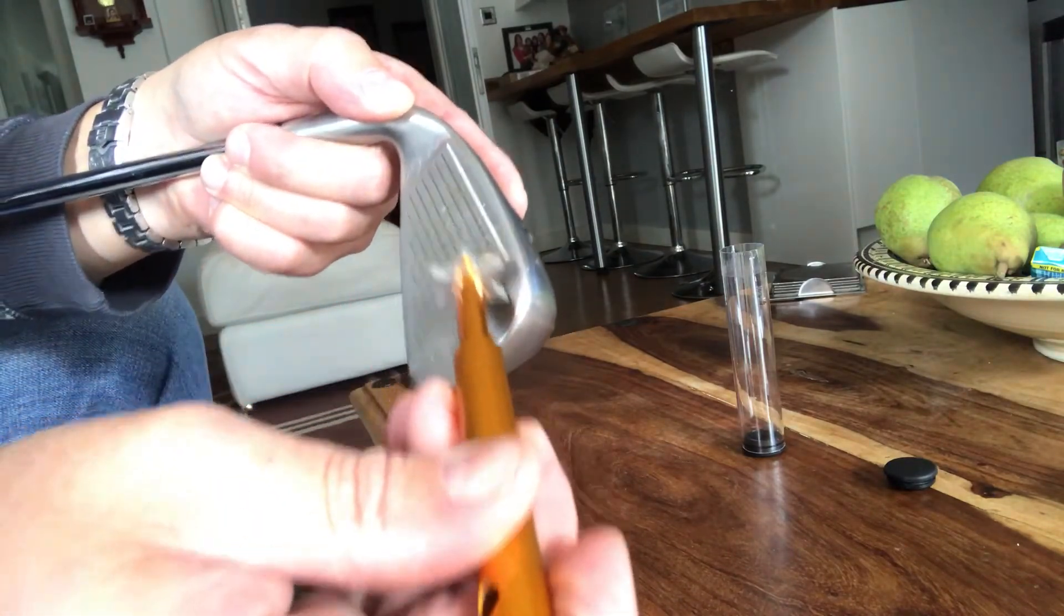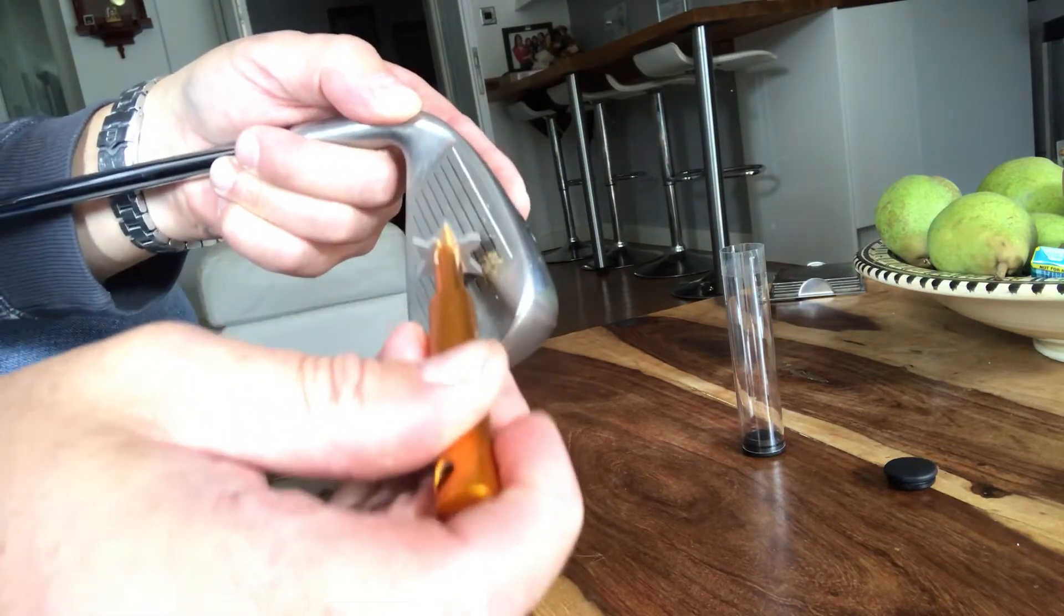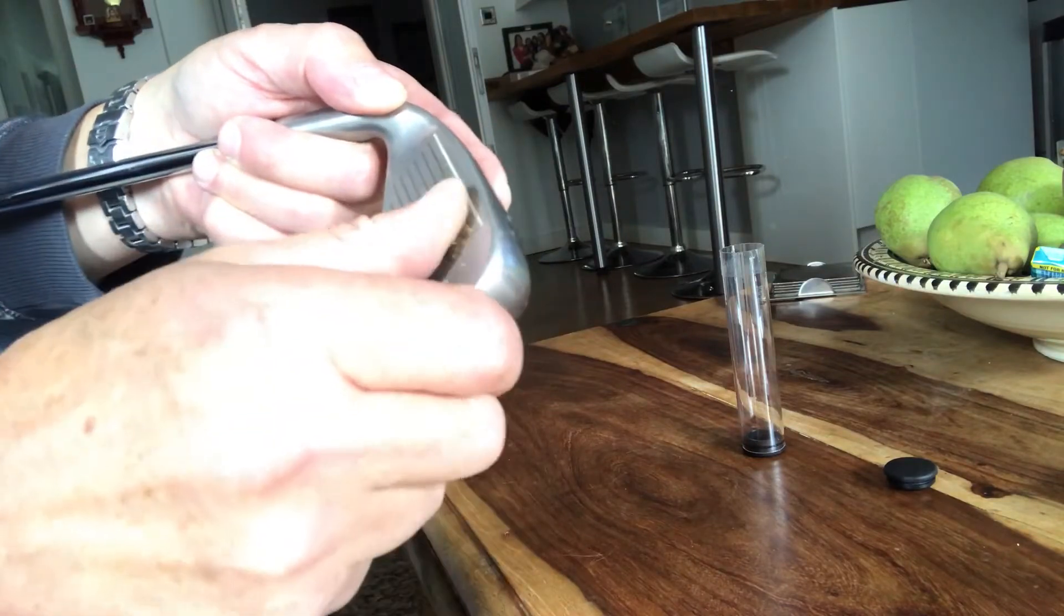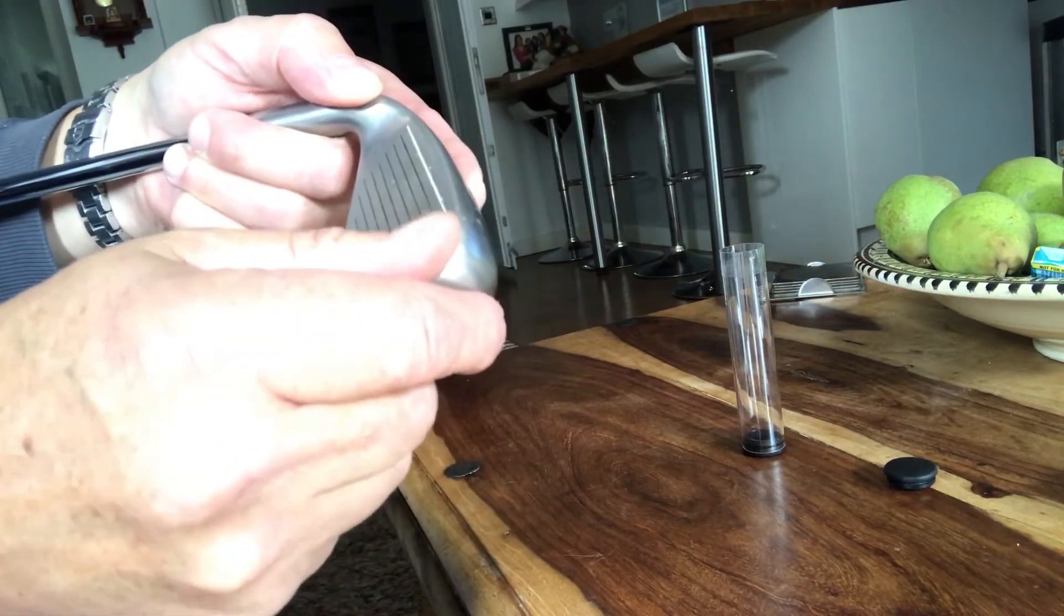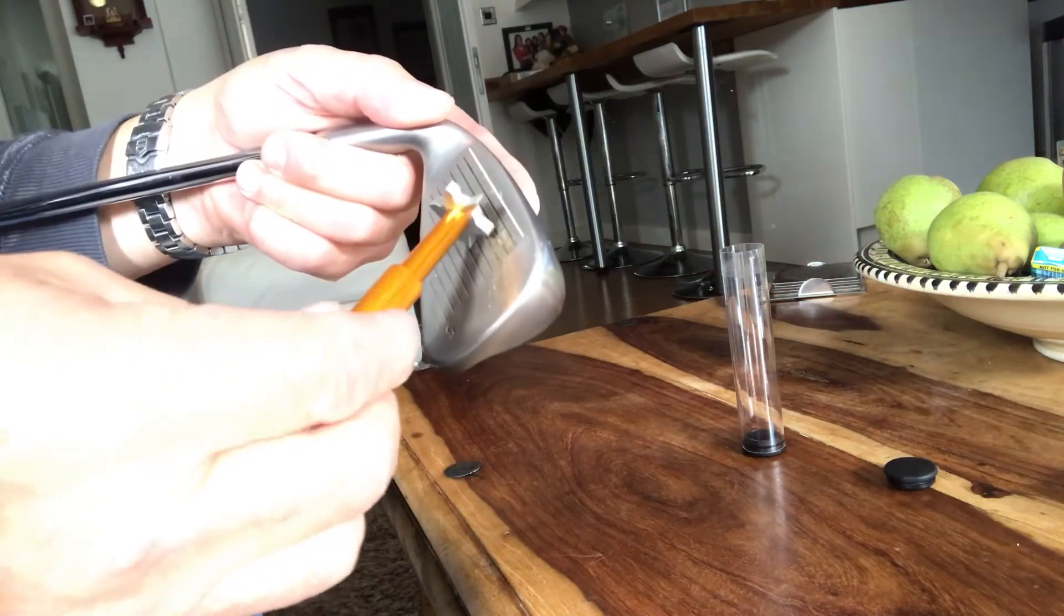Then if you want to make it a bit deeper, you can just press on it a bit harder. WD-40 is quite a good product to help you slide the cutter up and down the actual face of your club.